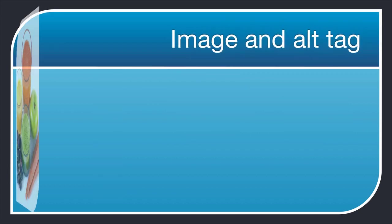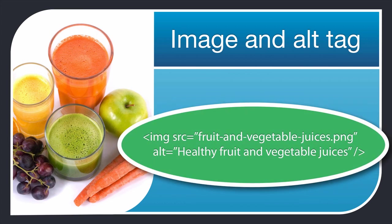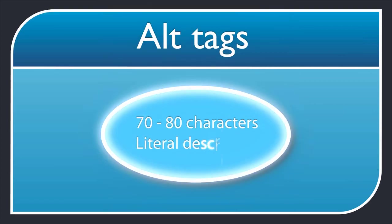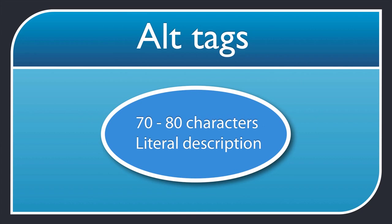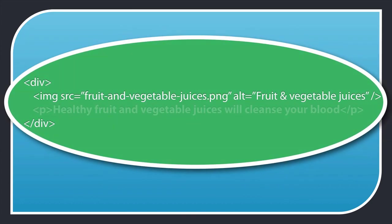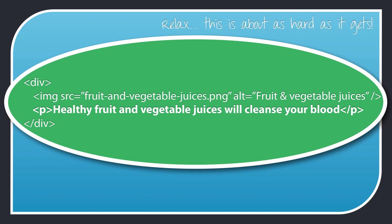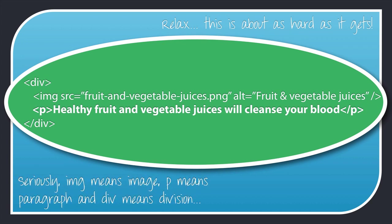I've gone to iStockphoto and found a representative image for the article that gets across the idea of a body detox. Here's my image tag, and notice that both the file name and the alt text is keyword-rich. Alt text means alternative text, and that is shown if a visitor cannot view the image — for example if images are turned off in their browser, or they're using a screen reader due to a visual impairment. The alt tag should be no more than 70 to 80 characters and should be a literal description of the image. You can create a caption as a paragraph below the image and gently work in a secondary keyword without it looking unnatural.